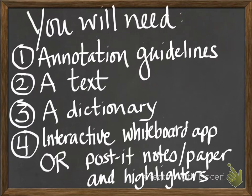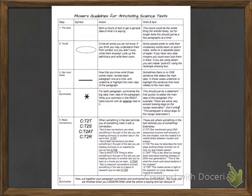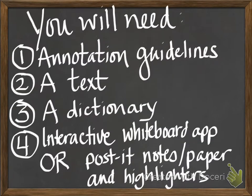To begin with, you're going to need four things. Some sort of annotation guidelines — if you are my student, you'll be using Moser's Guidelines for Annotating Science Texts. You'll need a text of some sort. You'll need access to a dictionary, which could be online or a paper dictionary. And you'll need either an interactive whiteboard app, such as Sari or Explain Everything, or a bunch of post-it notes, some paper, and highlighters.